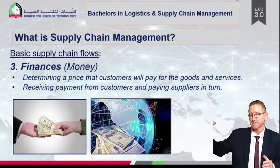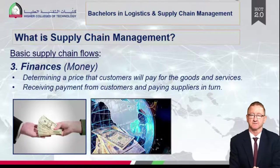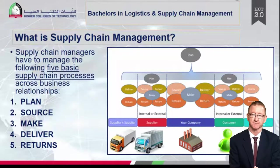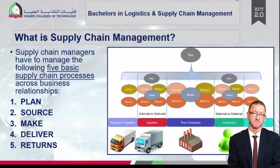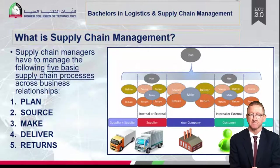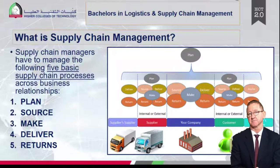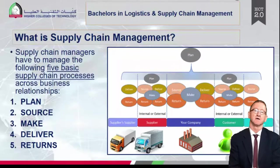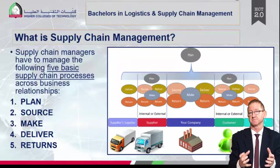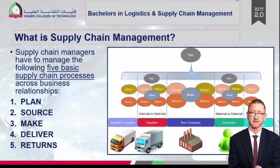In some cases the finance or money flow can also go towards the customer where companies decide to reimburse or give money back. For supply chain processes, I've decided to use the Supply Chain Operations Reference, or SCOR model. This is a simple and easy method to explain how supply chain processes are used. We will look at five processes: plan, source, make, deliver, and returns. Each company within the supply chain will use all these processes.